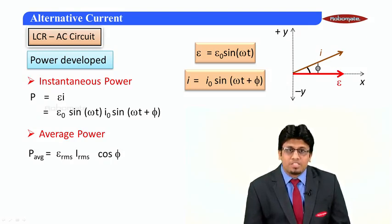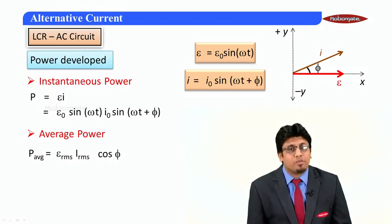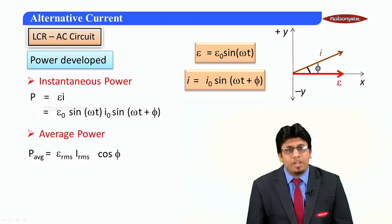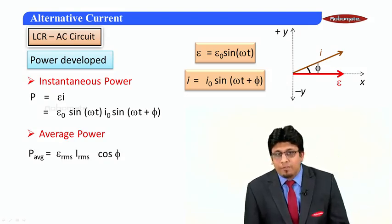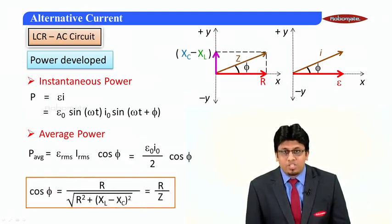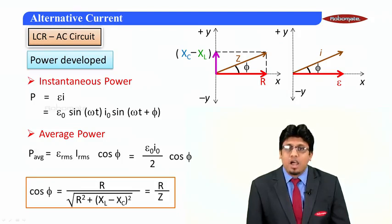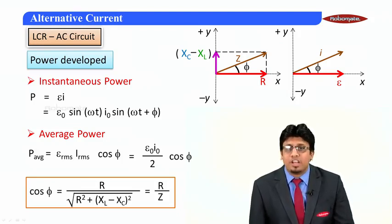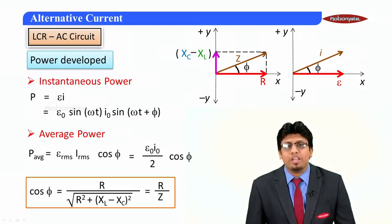P average is given by εRMS × IRMS × cos(φ), where φ again is the angle between current and the EMF which can be found out using the phasor diagrams. Which in this particular case can be written as R/Z, and therefore power factor for an LCR circuit is given by R/Z.